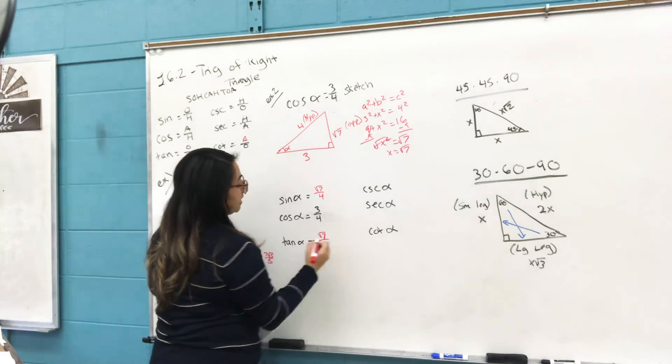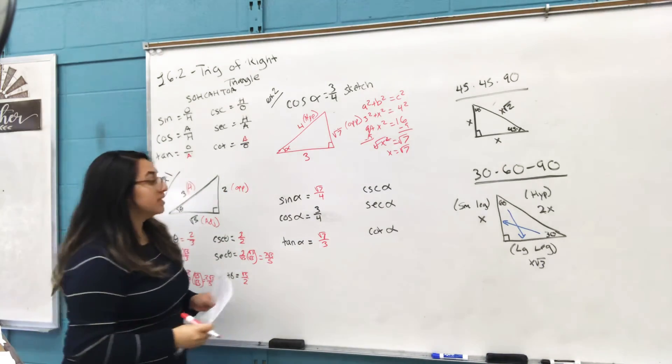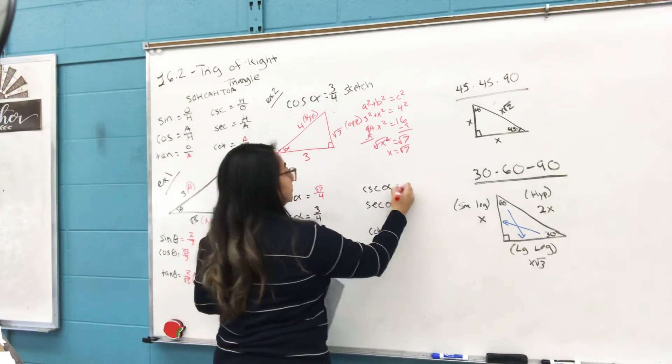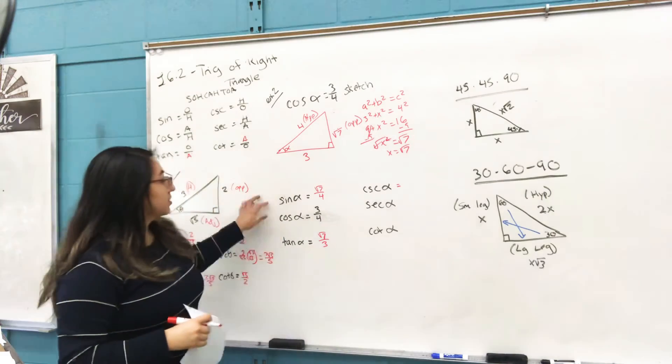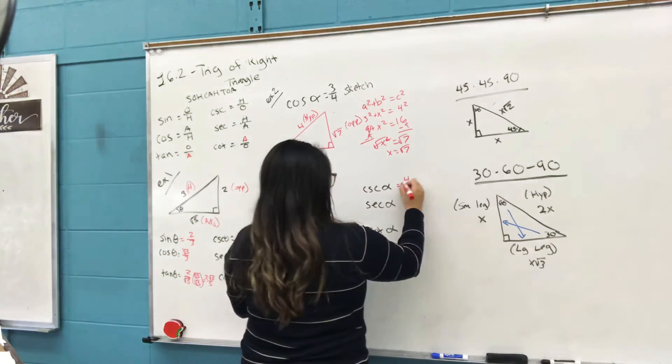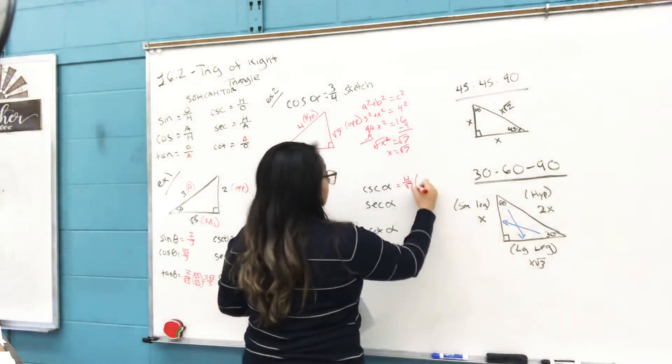Next one: cosecant. You find the reciprocal of sine, which is 4 over √7. Rationalize it.